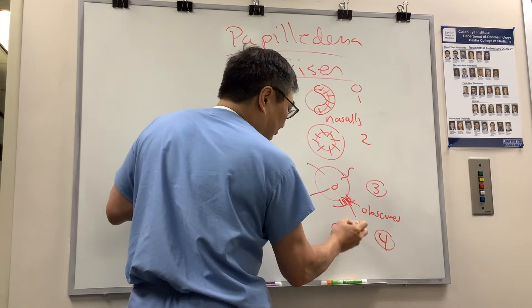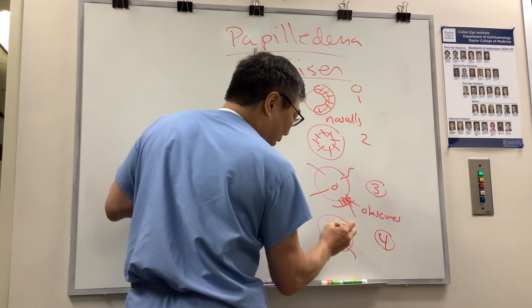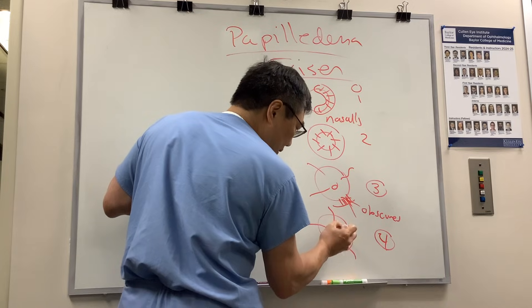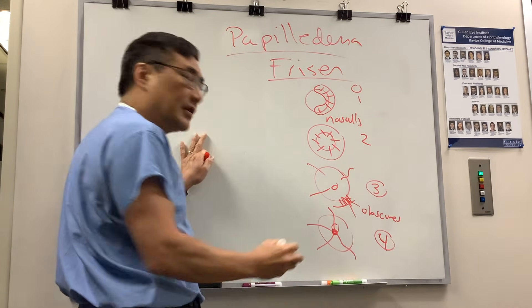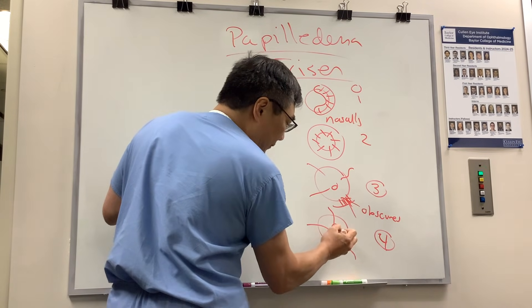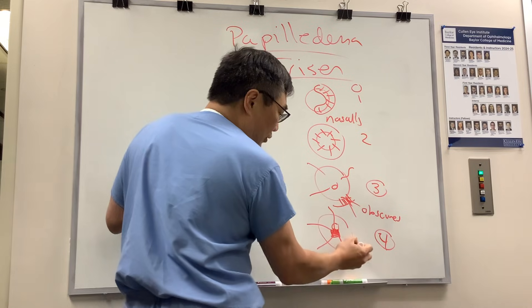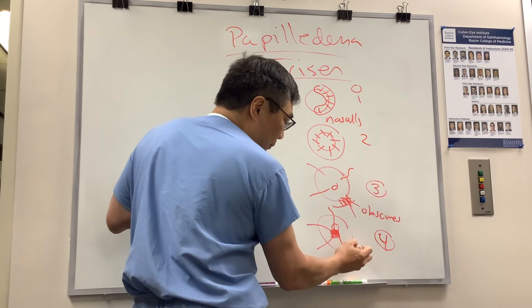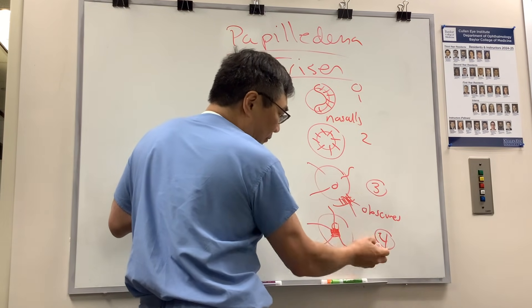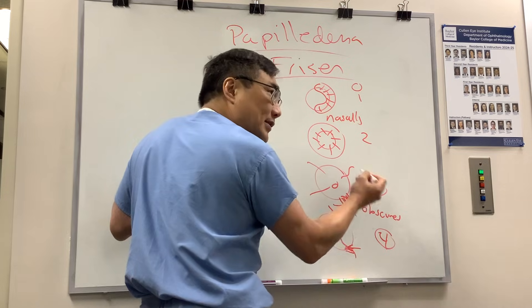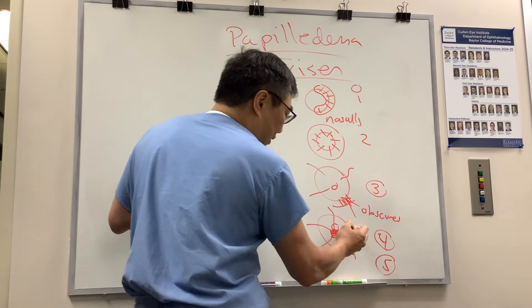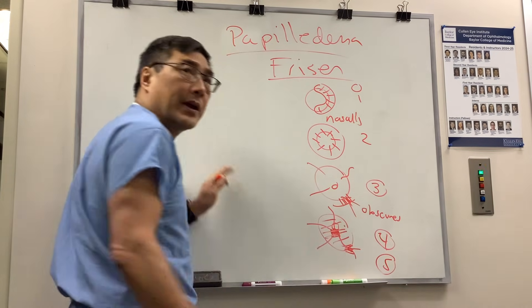Grade four means the central vessel is obscured. So if you're only obscuring the periphery, that's a three; if it's central, that's a four. And grade five means everything is obscured.